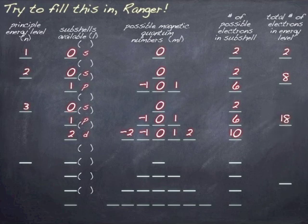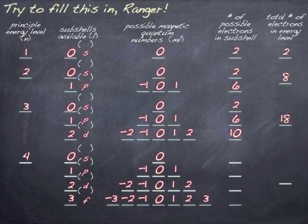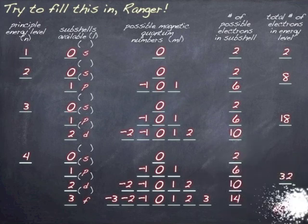And then really every energy level beyond that, energy level four and beyond, you can have up to an F also. And so we have the F subshell having seven orbitals, negative three, negative two, negative one, zero, one, two, three. And so there you get the maximum at an energy level of 32 electrons.